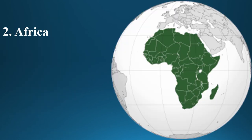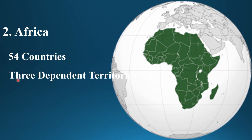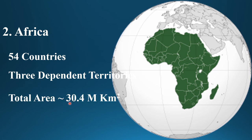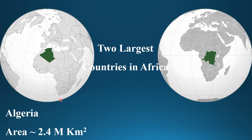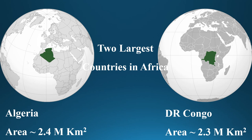The second largest continent is Africa. Africa has 54 countries and three dependent territories. The total area of Africa is about 30.4 million square kilometers. The two largest countries in Africa are Algeria and the Democratic Republic of Congo. The area of Algeria is 2.4 million square kilometers, while the Democratic Republic of Congo has an area of 3.3 million square kilometers.